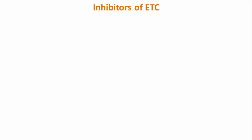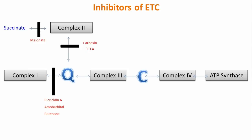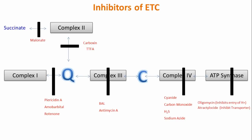Now let's look at the inhibitors of the electron transport chain. Inhibitors of complex 1 (blocking hydrogen transfer from complex 1 to cytochrome Q) include piericidin A, amobarbital, and rotenone. Succinate to complex 2 is inhibited by malonate. Complex 2 to cytochrome C is inhibited by carboxin and TTFA. Complex 3 is inhibited by BAL (British Anti-Lewisite) and antimycin A. Complex 4 is inhibited by cyanide, carbon monoxide, hydrogen sulfide, and sodium azide. The ATPase is inhibited by oligomycin, which blocks H+ entry, and atractyloside, which inhibits the transporter.